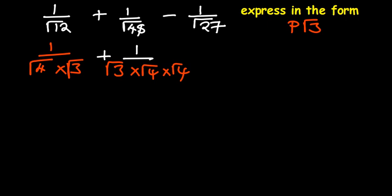And then minus 1 over root 27. 27, we know, can be divided by 9. So it's a product of 9 and 3. So root of 9, root of 3.